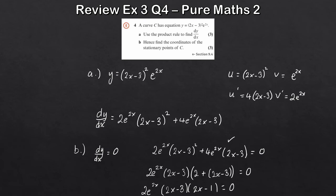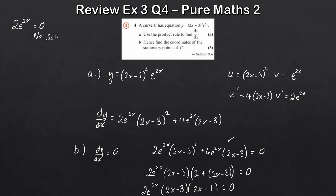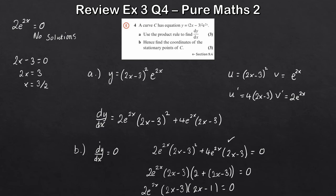Considering each factor: 2e to the 2x equals 0 gives e to the 2x equals 0, which has no solutions since e to any power is never 0. When 2x minus 3 equals 0: adding 3 and dividing by 2 gives x equals 3 over 2. When 2x minus 1 equals 0: adding 1 and dividing by 2 gives x equals 1 half.